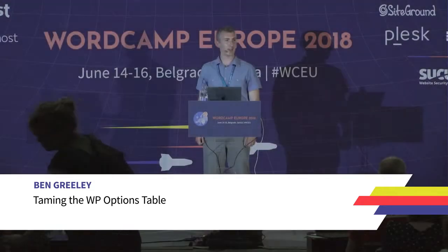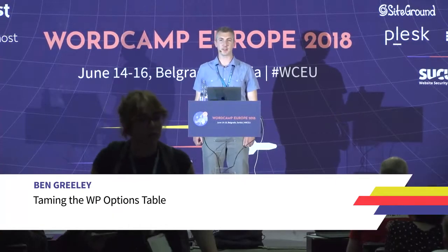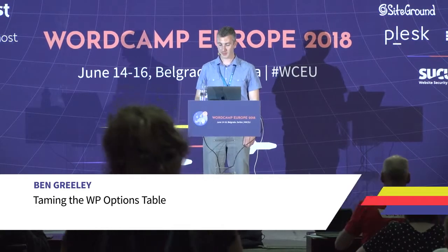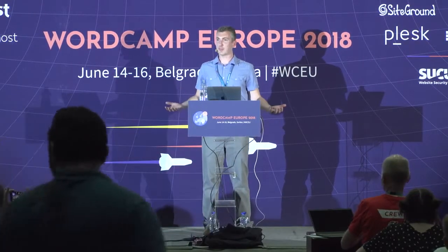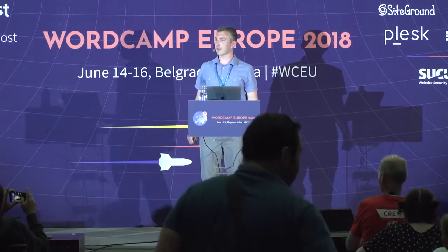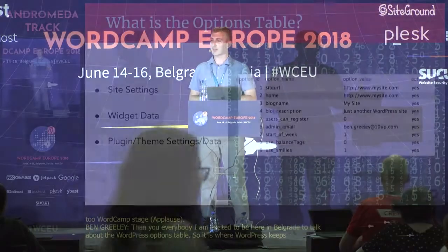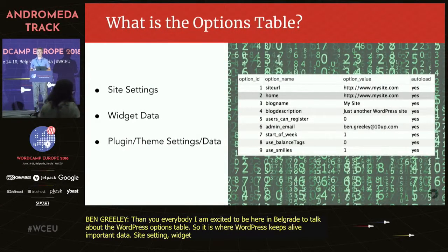I'm excited to be here in Belgrade to talk with you today about the WordPress options table. The WordPress options table is where WordPress keeps a lot of important data. It stores site settings, widget data, theme settings, plugin settings, and pretty much anything else that developers want to store there.